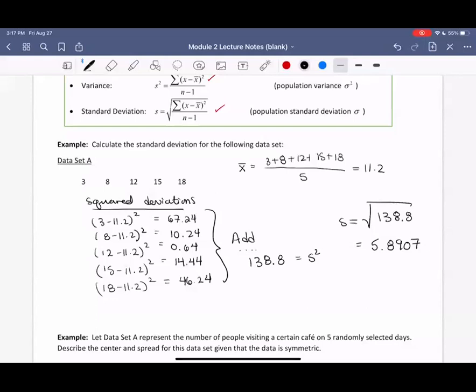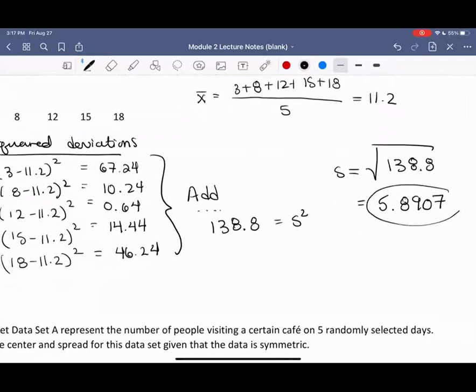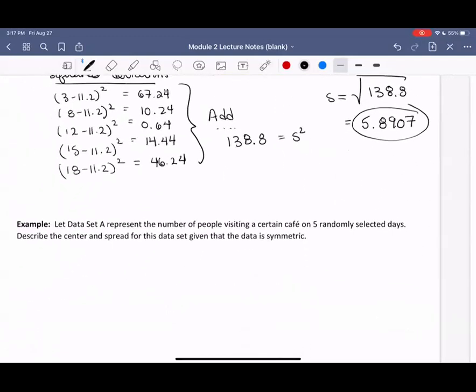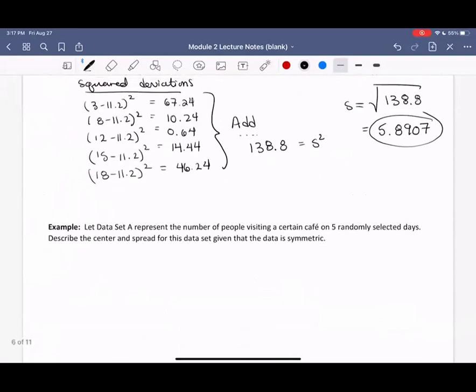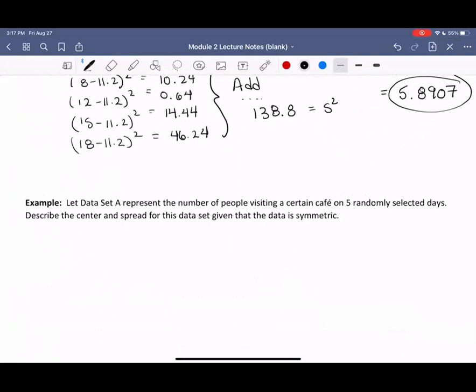Now let's try to make sense of what this standard deviation means in the context of a real world situation. Let this data set represent the number of people visiting a certain cafe on five randomly selected days. Describe the center and spread for this data set given that the data is symmetric. Given that the data is symmetric, then it makes sense to use the mean to describe the center of this data and the standard deviation to describe the spread.